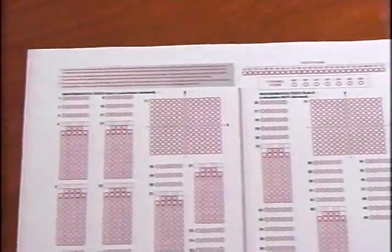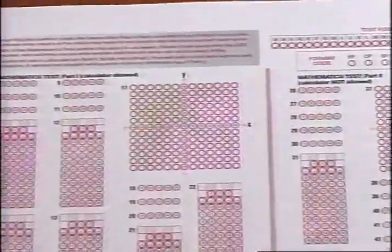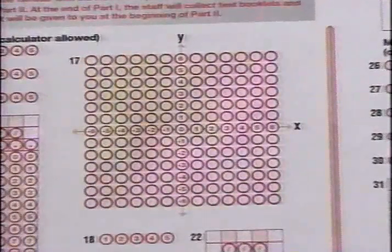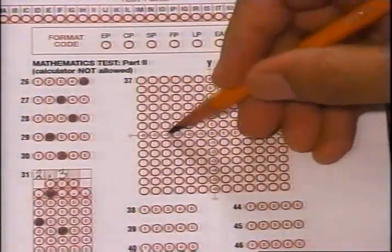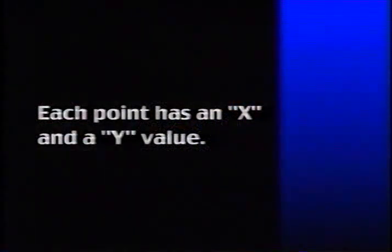When the answer to a question is a point on the coordinate plane, that answer is recorded on the coordinate grid. The grid represents some of the points on the central section of the coordinate plane. Each point has an x and a y value.